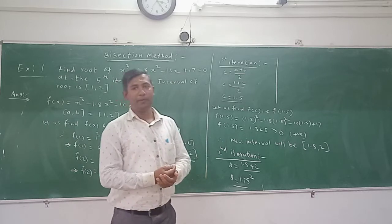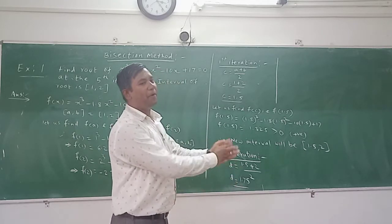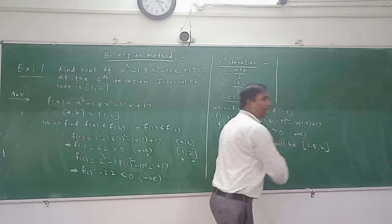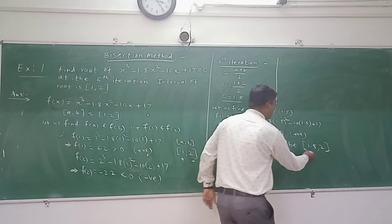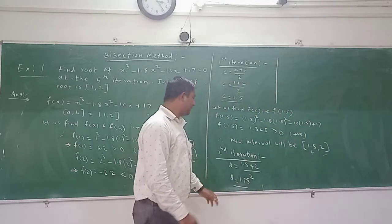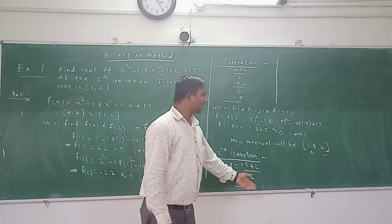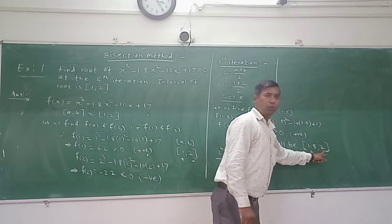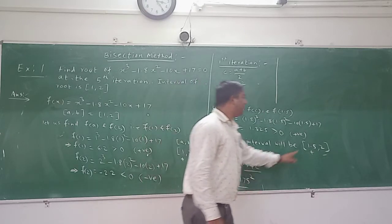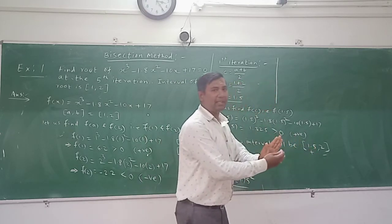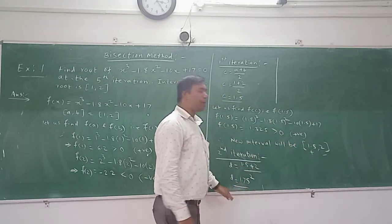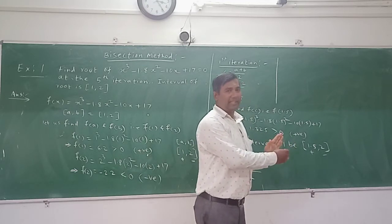So again what you will do? You will find f of d, either it will be positive or negative. Now this 1.5 has given positive and 2 has given negative value. Let us consider f of d has given a negative value, so it will replace 2. If f of d has given positive value, it will replace 1.5. So in this way the interval will close and at the end of third iteration your new root will lie between that new interval.